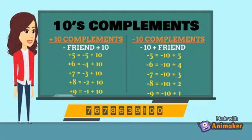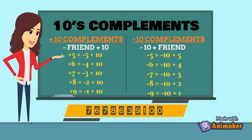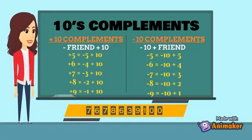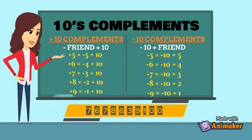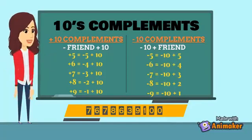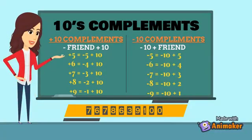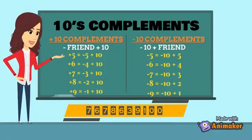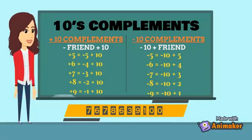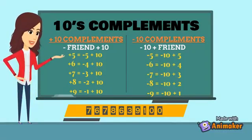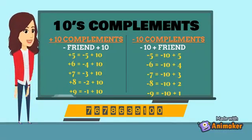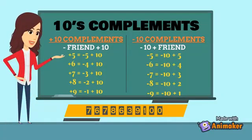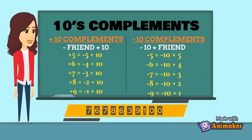For plus six: the friend of six is four, so write minus four plus ten. For minus six: minus ten plus four. For plus seven: minus three plus ten. For minus seven: minus ten plus three. For plus eight: minus two plus ten. For minus eight: minus ten plus two. For plus nine: minus one plus ten. For minus nine: minus ten plus one.